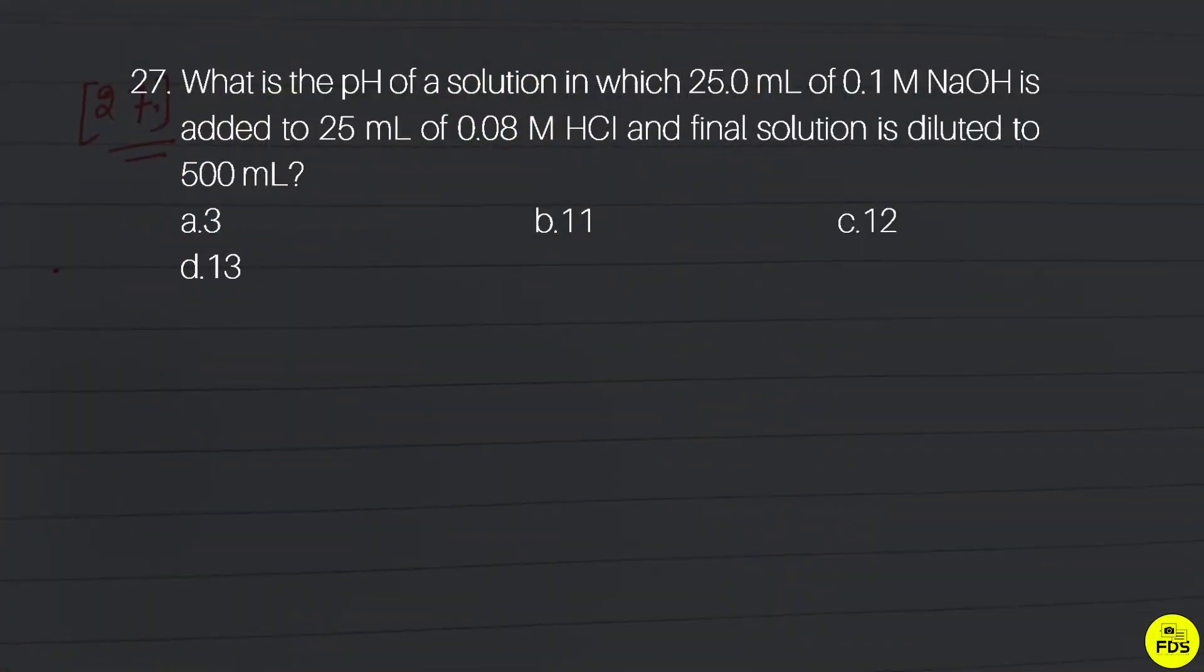What is the pH of a solution in which 25.0 mL of 0.1 M NaOH is added to 25 mL of 0.08 M HCl and the final solution is diluted to 500 mL?